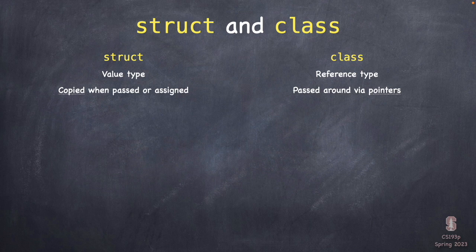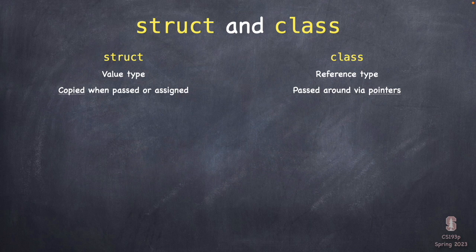A value type means the storage for the variable is actually right there — no pointers. When you pass a value type to a function, you get a copy of it. Even when you assign one variable to another, you made a copy. Every time it gets passed around or assigned, it's getting copied. If you give a copy and that function mucks it up, it only mucks it up for itself — not for you. You may have seen array.shuffle(), which shuffles in place and only works on a var, versus array.shuffled() which returns a new shuffled array — that's the Swift way.